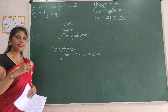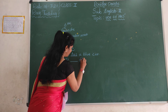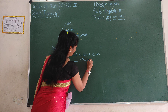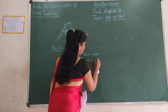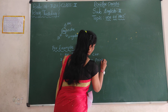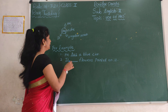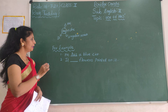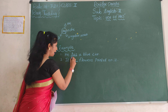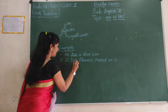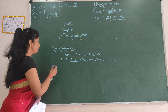Second example: it dash flowers printed on it. The answer is it has — it has flowers printed on it.